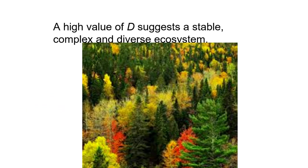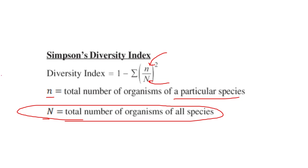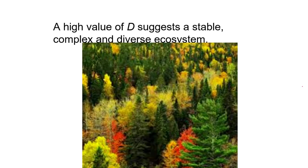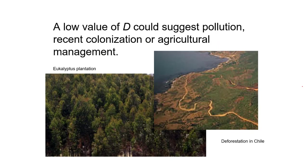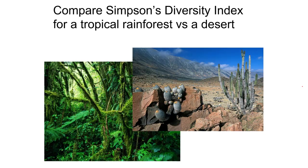If you have a high value of D — your diversity score — that's going to be a really stable, complex ecosystem. More biodiversity means the ecosystem is healthier, because if something came around and wiped out all of species A, species B, C, and D can repopulate. A low value of D would suggest less diversity. It could be that humans have caused that — some kind of disturbance like pollution or deforestation. It's not always human-caused, but that's what we see most of the time nowadays.